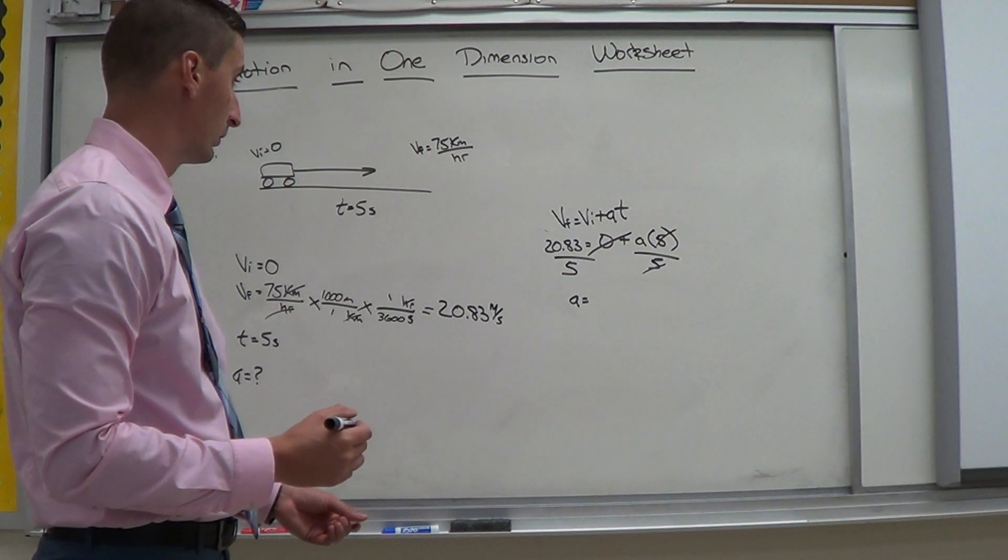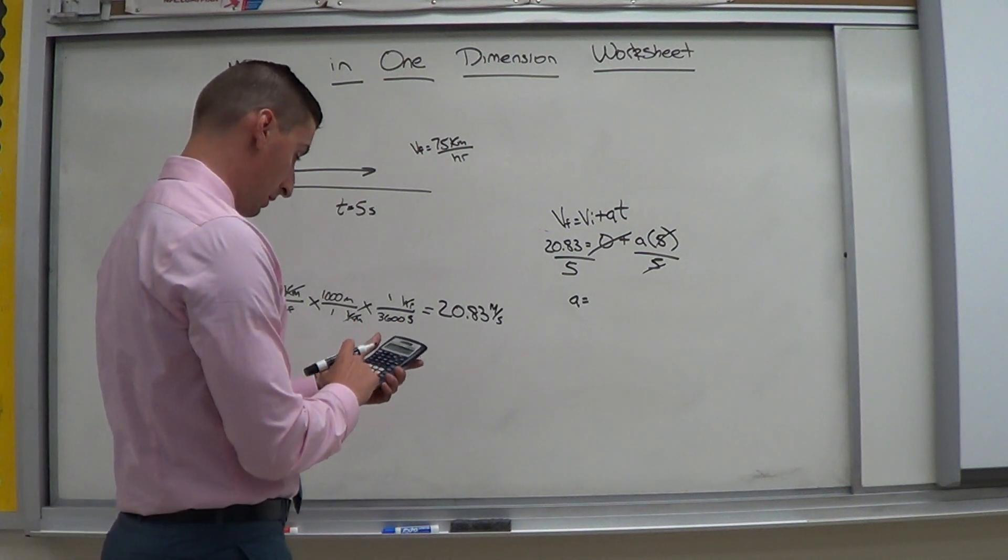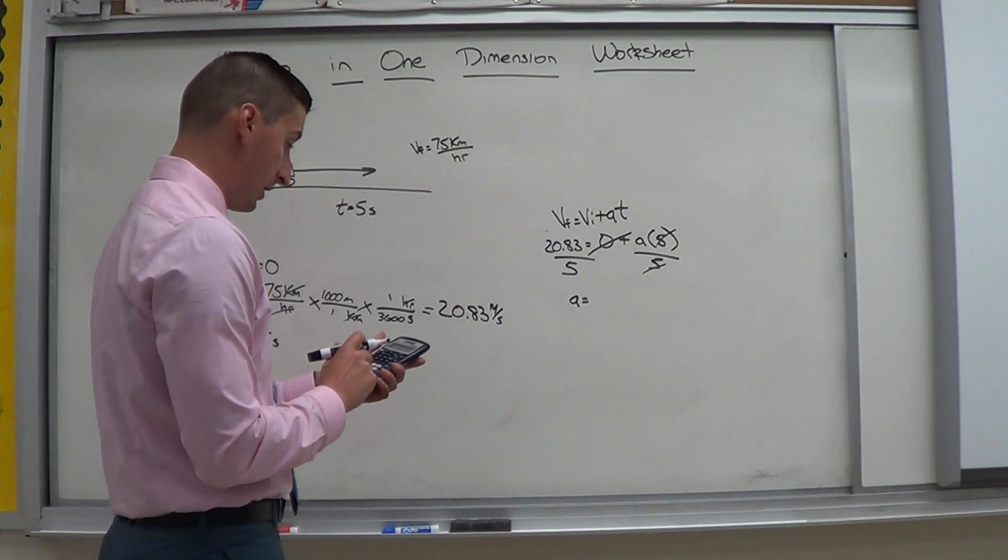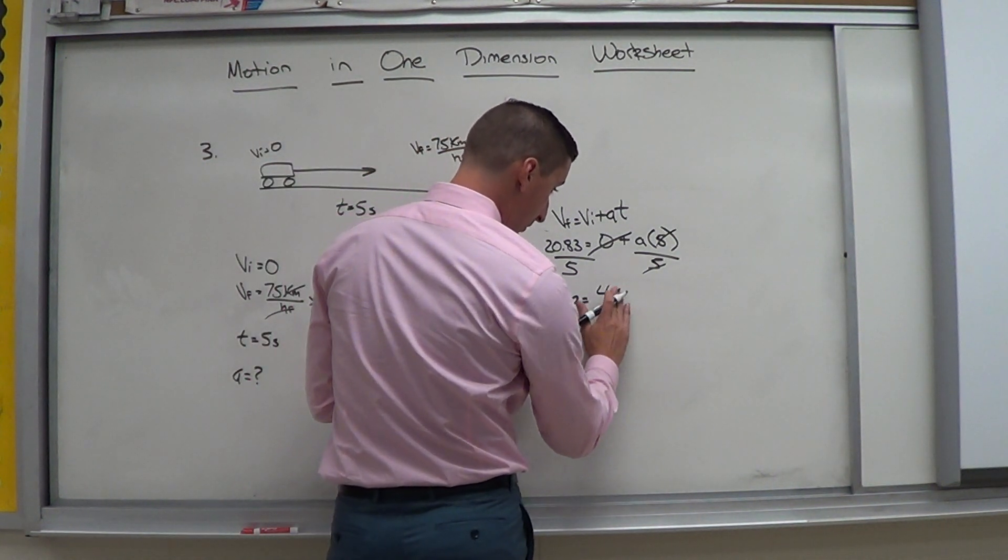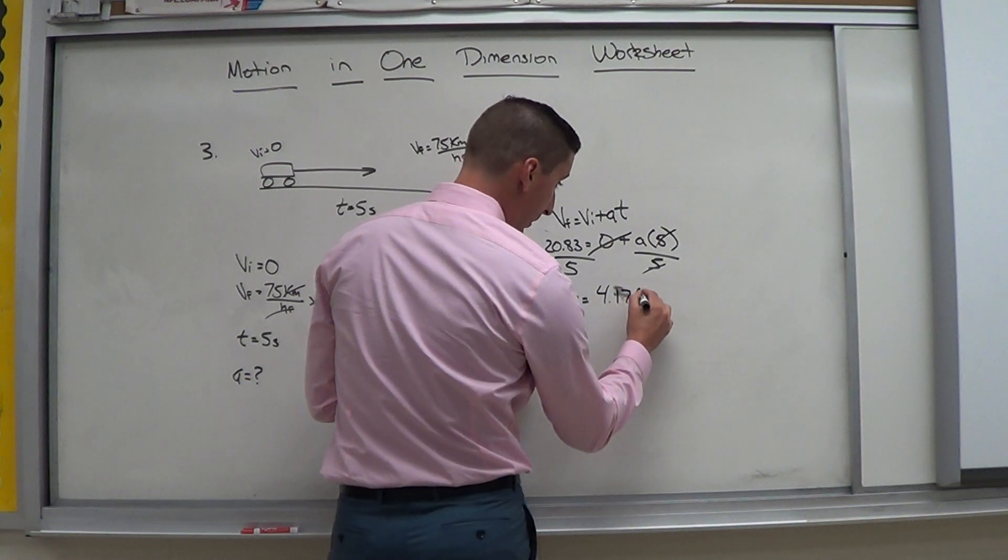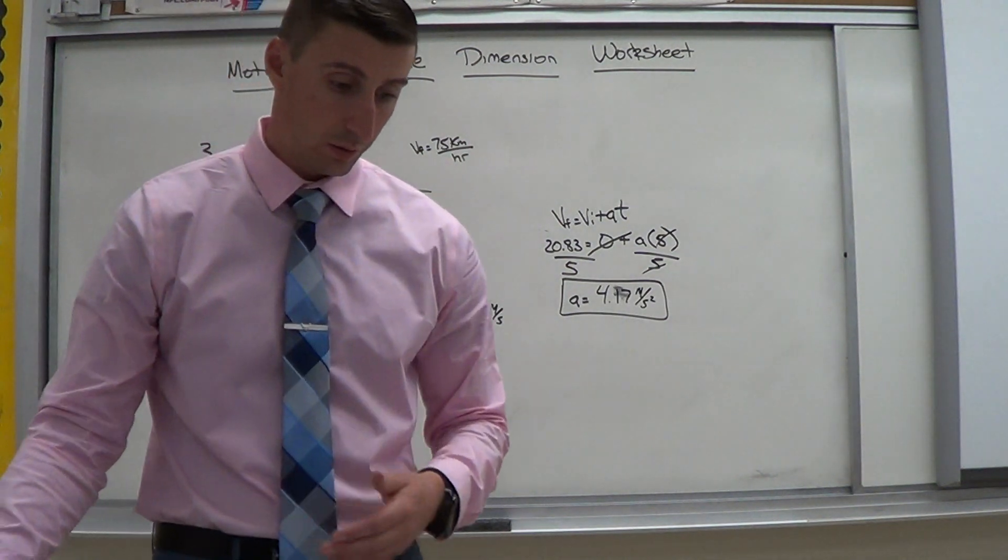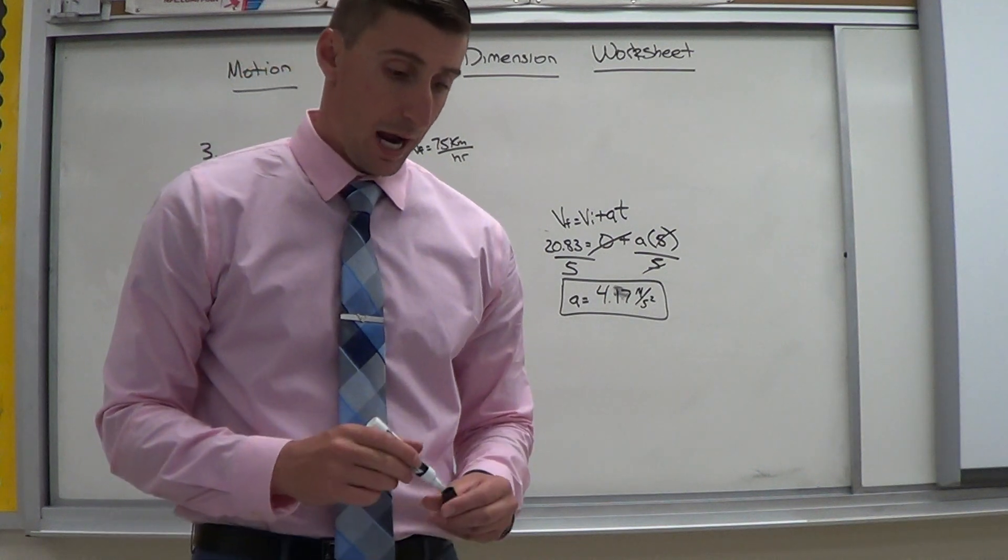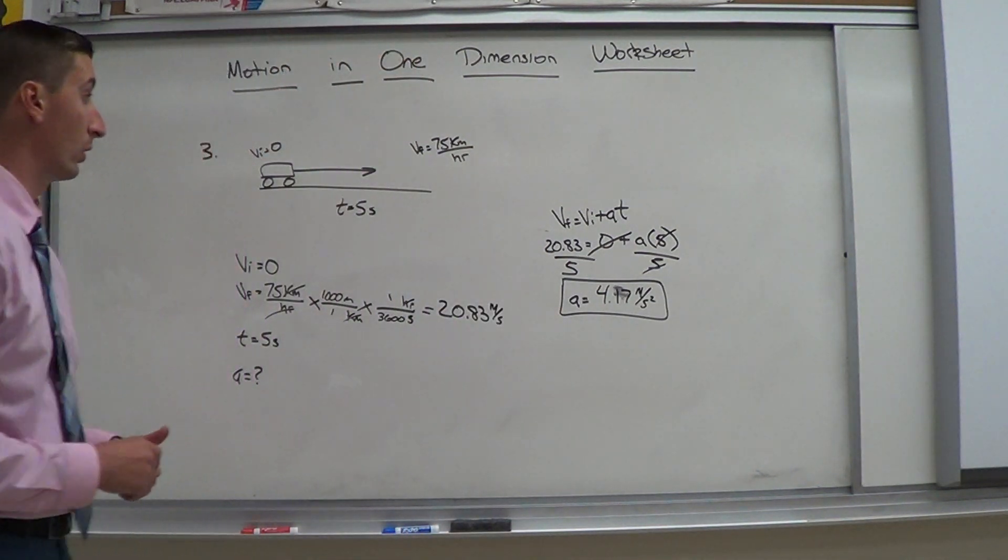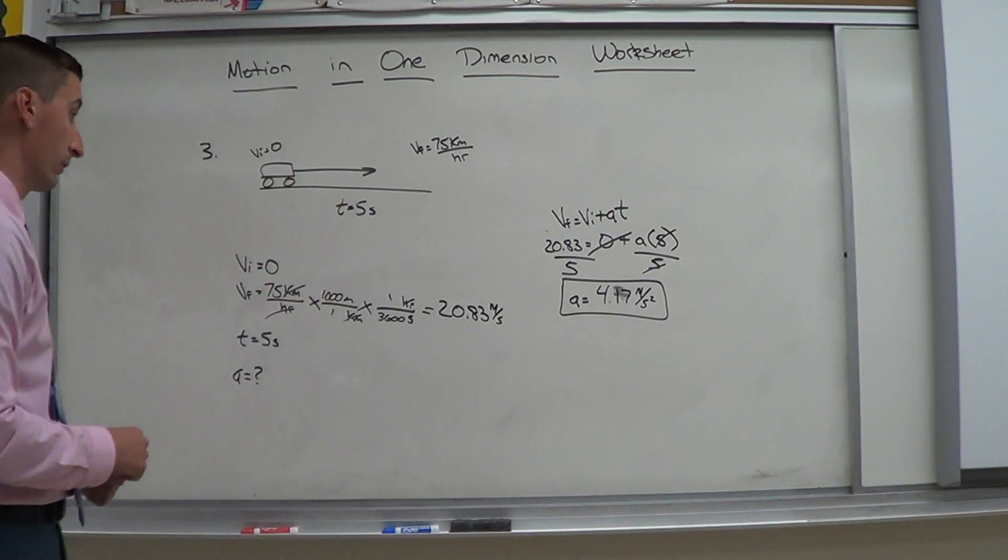Twenty point eight three divided by five gives me four point one seven meters per second squared. Alright. Now. Let's go on to number four. So there is all the work. Picture. Next step. This is your knowns. This is the expanded equation. And I pick the equation and solve for there.